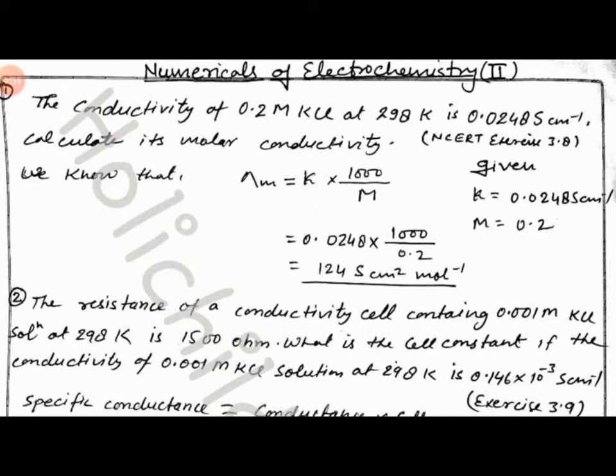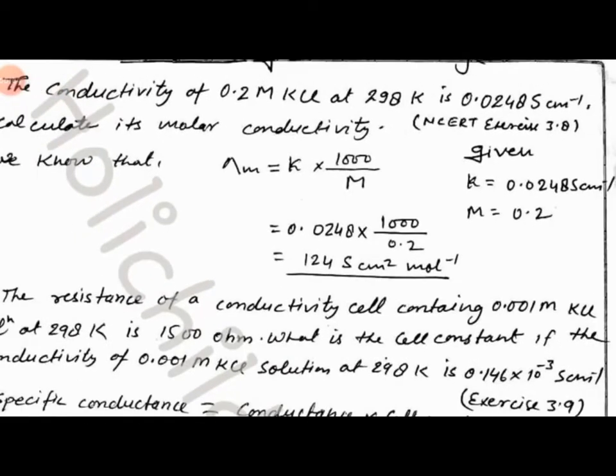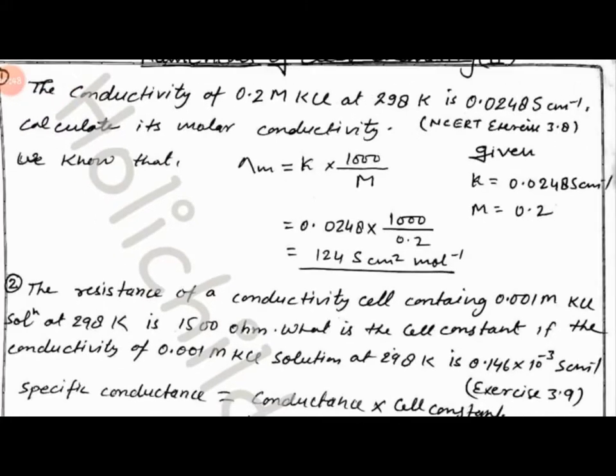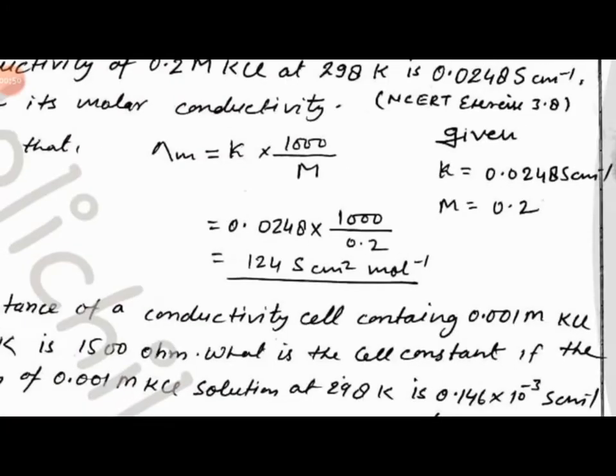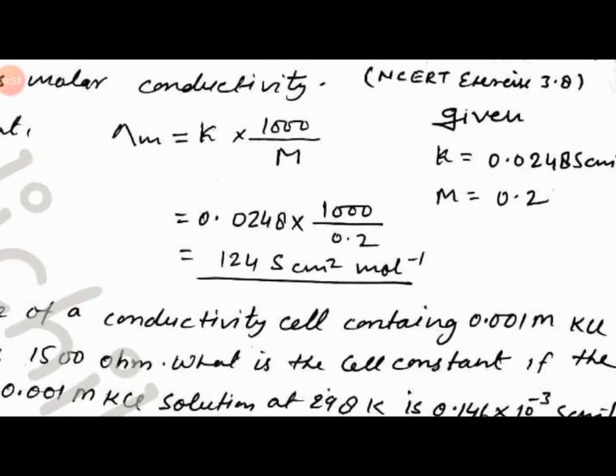Students, as we know, the molar conductivity is equal to kappa times 1000 upon M, where M is molarity. Given value of kappa equals 0.0248 Siemens per cm and M equals 0.2, we put all values: 0.0248 times 1000 divided by 0.2.